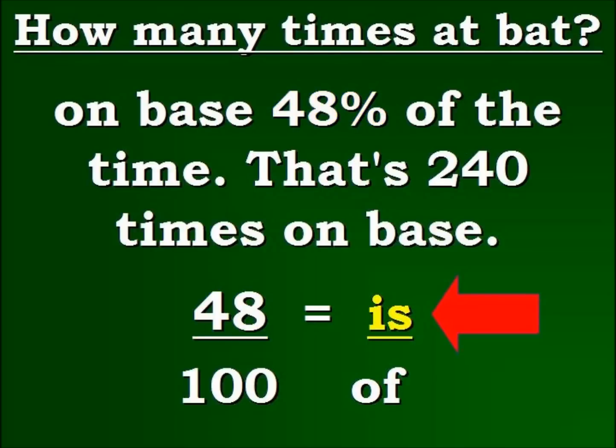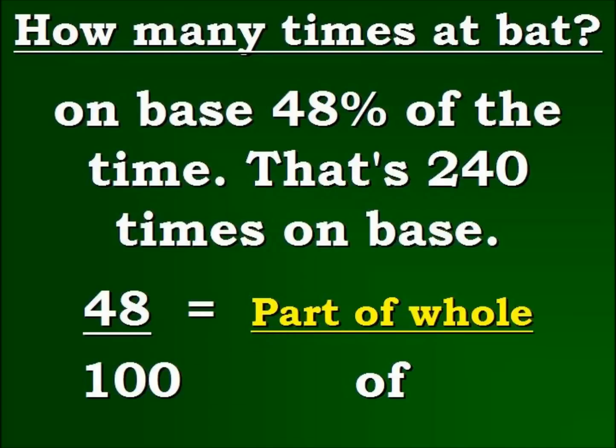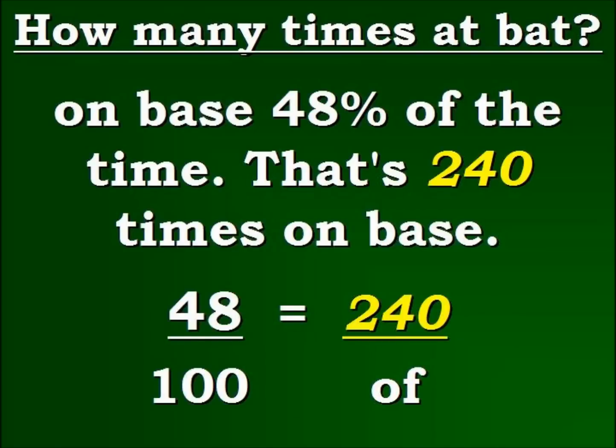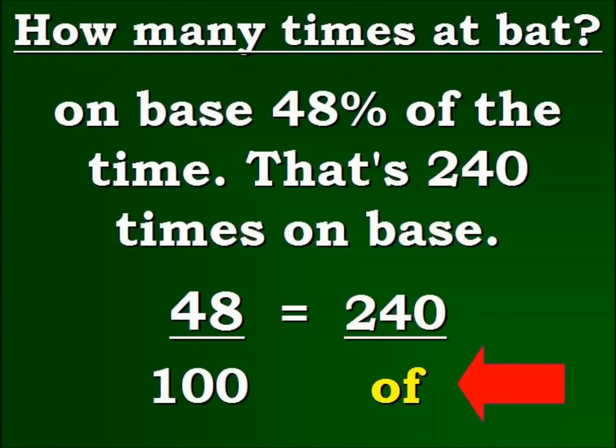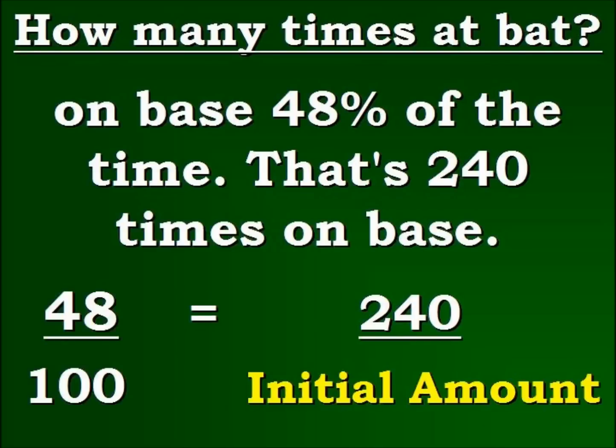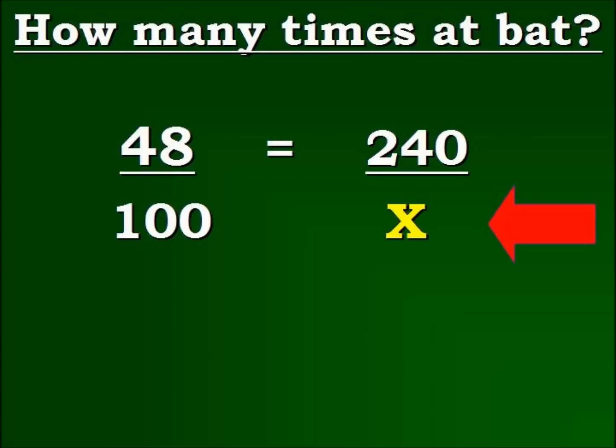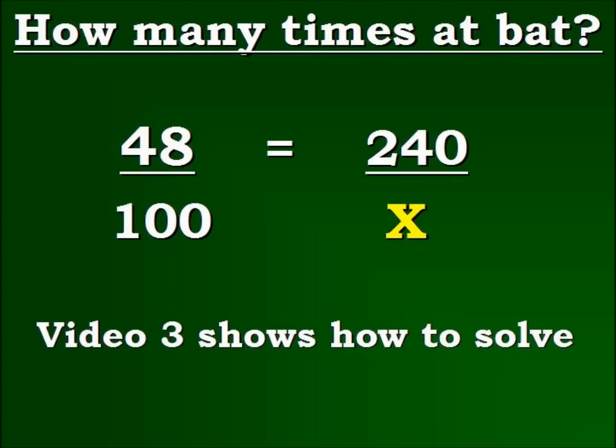We're going to move over to the is. Now, where's the is value? We understand that's part of the whole, and part of the whole is 240. So that's the 240 we plug in there. Now, what value do we plug in for of? Of is the initial amount, the whole. It's the total. And that's unknown at this point. So we're going to plug in x there. So now that we have plugged in all the values we know for our formula, you can use video three to solve.